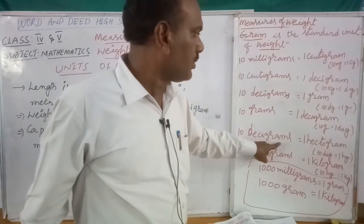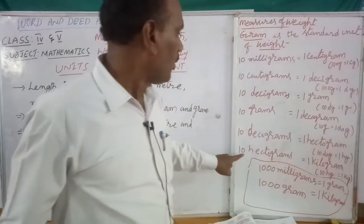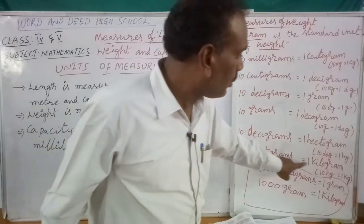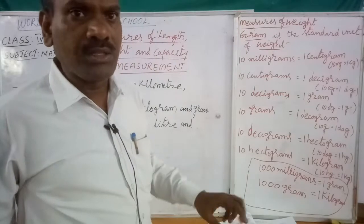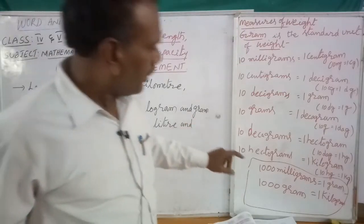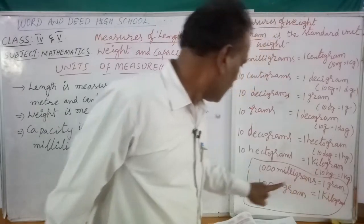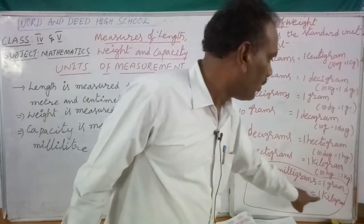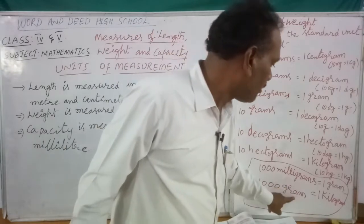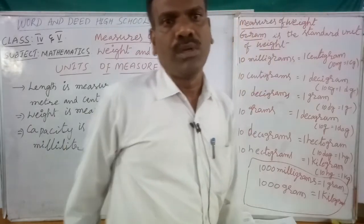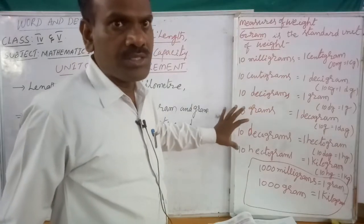10 decigrams equal to 1 gram. 10 grams equal to 1 decagram. 10 decagrams equal to 1 hectogram. 10 hectograms equal to 1 kilogram. In this chapter we mainly use: 1000 milligrams equal to 1 gram, and 1000 grams equal to 1 kilogram.